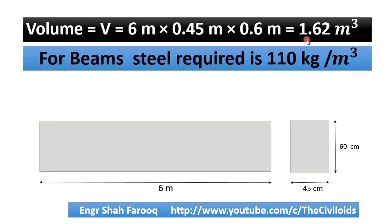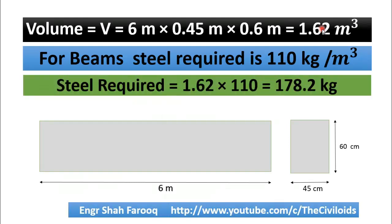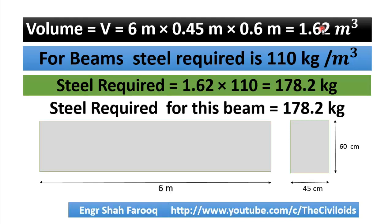For beams, the steel quantity required is 110 kg per meter cube. To determine the quantity of steel, just multiply this value with the volume you have calculated. Steel required for this beam = 1.62 × 110, which after a simple calculation gives us 178.2 kg. So you can see that the steel required for this beam is 178.2 kg, calculated using a simple thumb rule without any comprehensive calculations or design software.